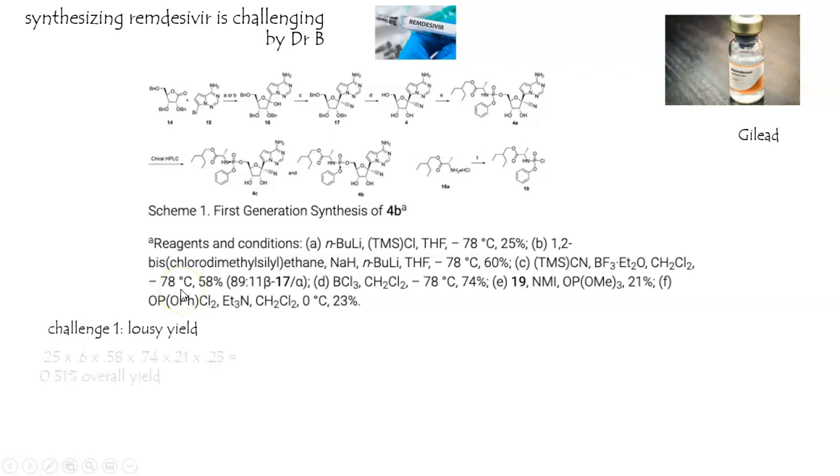The yields are lousy. If you take each yield and multiply them by each other, so you're going to get 60% of the 25% yield that you had after two steps, and then 58% of that after three steps. So I think you could see if you multiply these all together, you're below a 1% overall yield. That's tough. That means you have to start with at least 100 times the amounts that you need in order to get what you need at the end. So you're going to lose over 99% of what you start with.